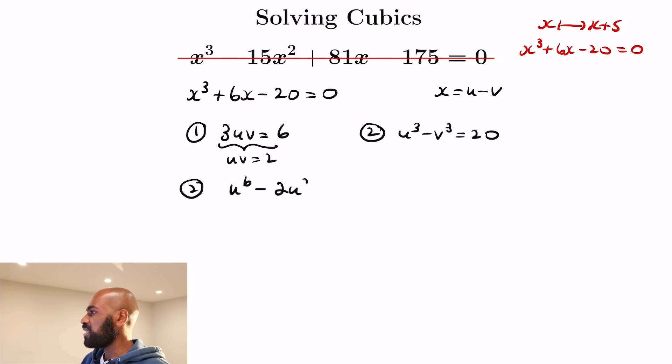So if you square the second equation, we get u to the 6 minus 2u cubed v cubed plus v to the 6 is 400. Since uv is 2...